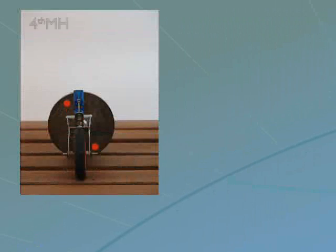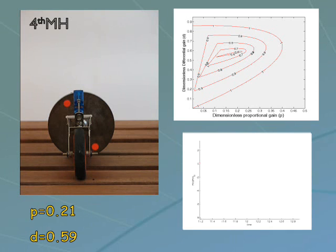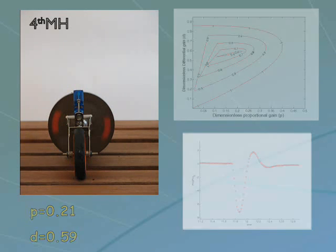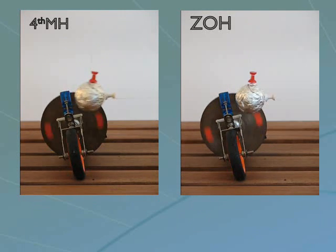Now to compare the results, we switch to the fourth order modified hold and redo the experiment. As we were expecting, the settling time is improved around 10%, and this is done at more than 5 times bigger proportional gain, which means better accuracy.